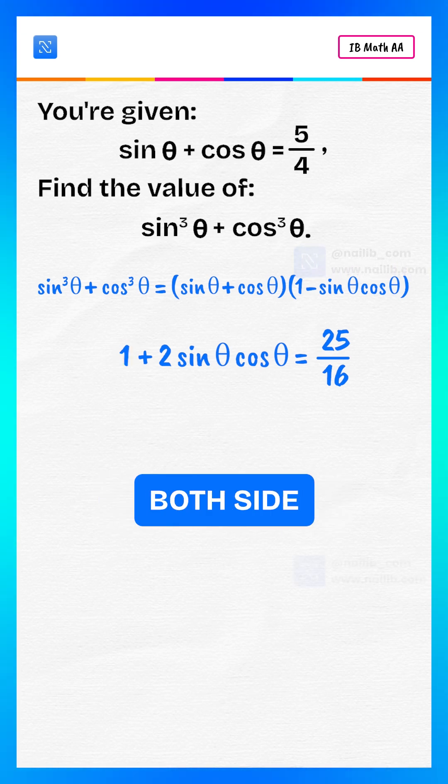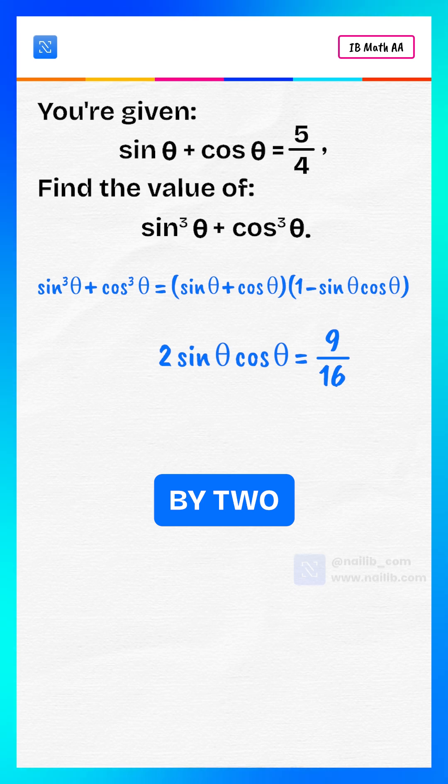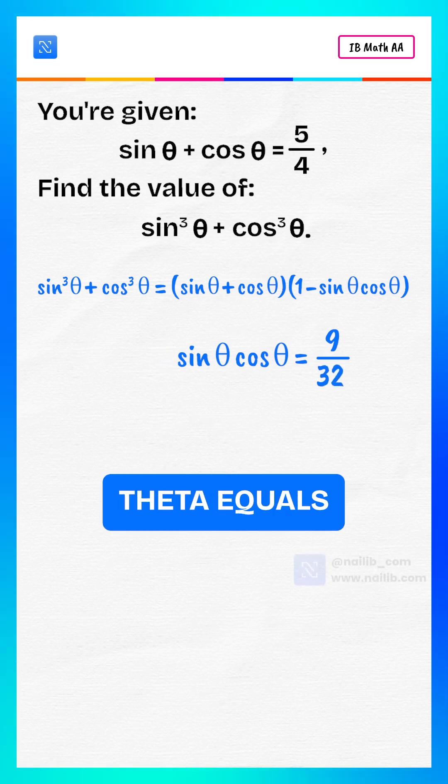Subtract 1 from both sides. We have 2sin θ cos θ = 9/16. Now, divide both sides by 2. We have sin θ cos θ = 9/32.